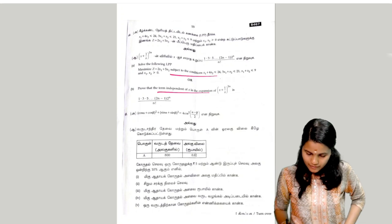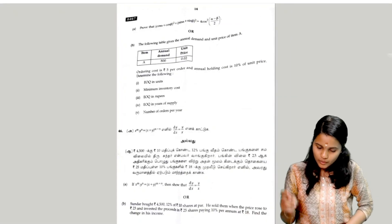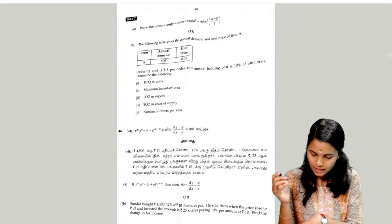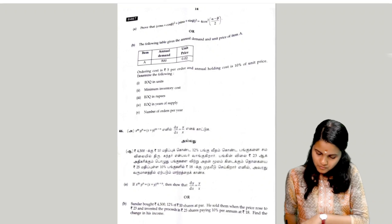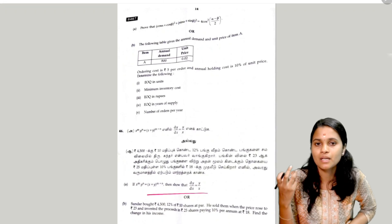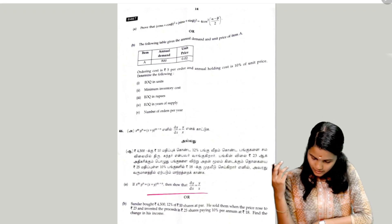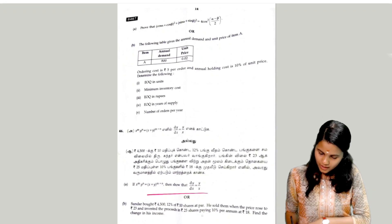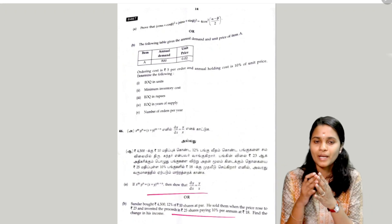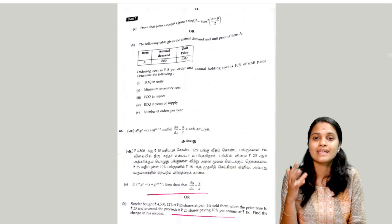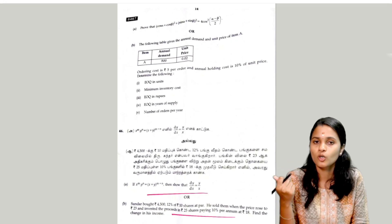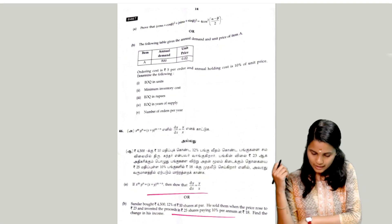The next question is the 45th: EOQ — Economic Order Quantity — based on this question. The 46th question is differentiation-based. Given the data, find the income change — if we change income, we solve the equation to get the solution.